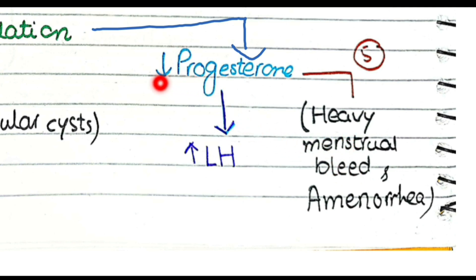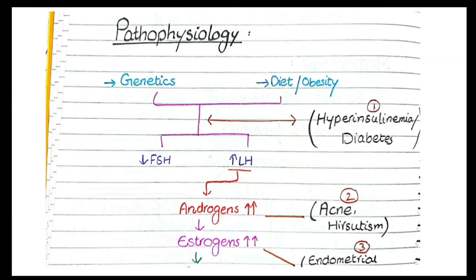Due to the thickened and hyperplastic endometrium, when bleeding occurs it will be heavy menstrual bleeding — contributed further by the decrease in progesterone. Also, because estrogen and progesterone are not interacting in a cyclic way, the lack of proper hormone sequencing results in amenorrhea or oligomenorrhea. Women with polycystic ovarian syndrome may have their menses delayed for three or four months (oligomenorrhea) or may stop completely (amenorrhea).